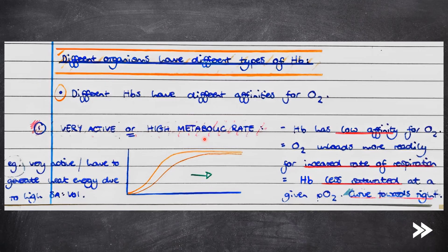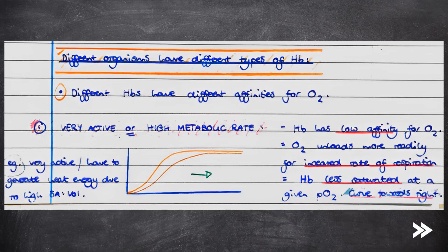then the organism may have a type of haemoglobin which has a low affinity for oxygen. Therefore, oxygen unloads more readily so that there is more oxygen available for the increased rate of respiration. Haemoglobin is less saturated at a given partial pressure of oxygen, and therefore our curve shifts to the right.